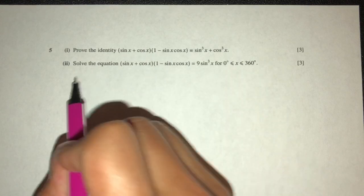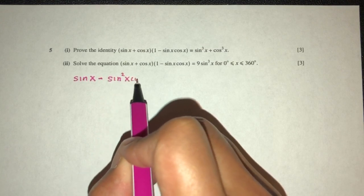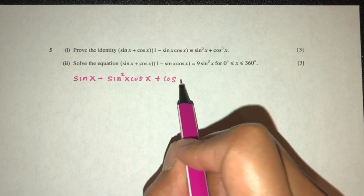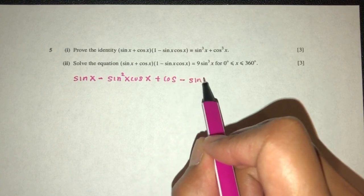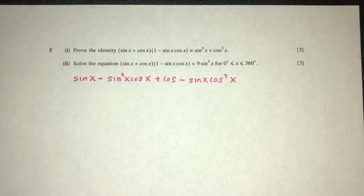You'll have sin x times this will become sin x minus sin²x cos x. Then this times this will become plus cos x minus sin x cos²x. So let's see how we can simplify and see what that will lead us to.